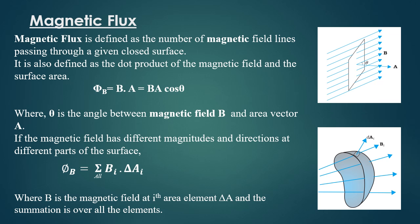In such case, flux can be found for small area elements throughout the surface and taken summation over all the area elements.